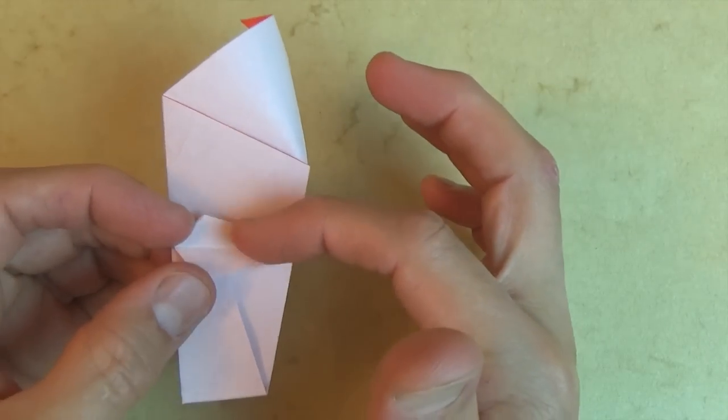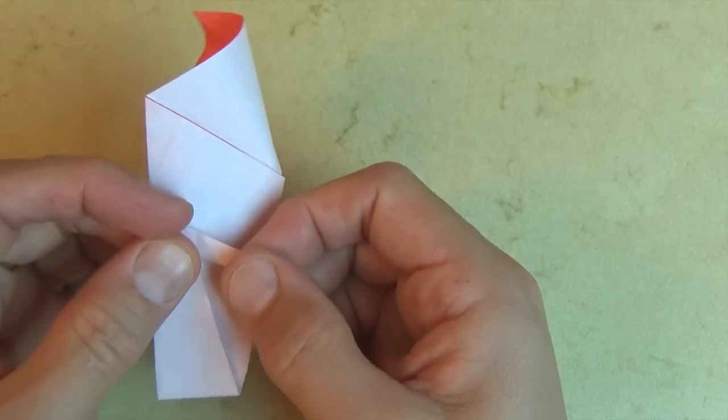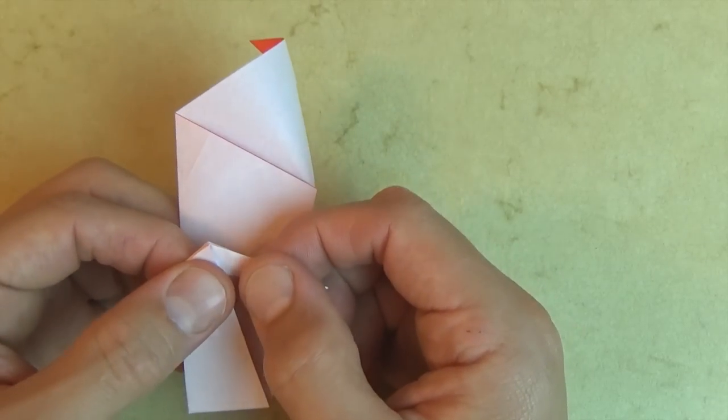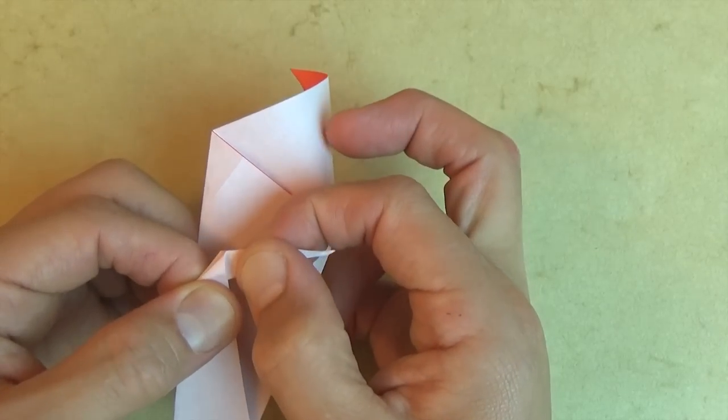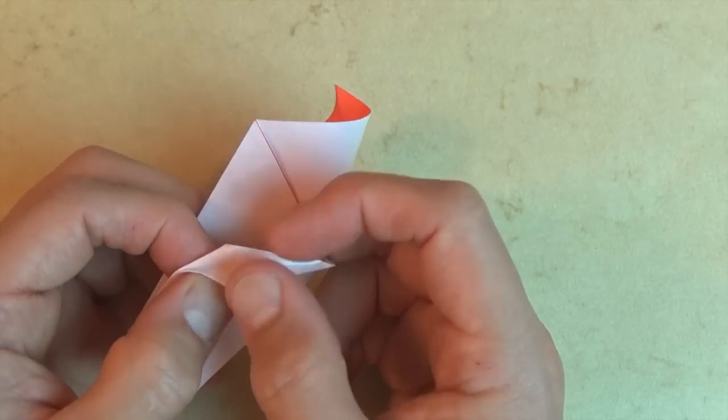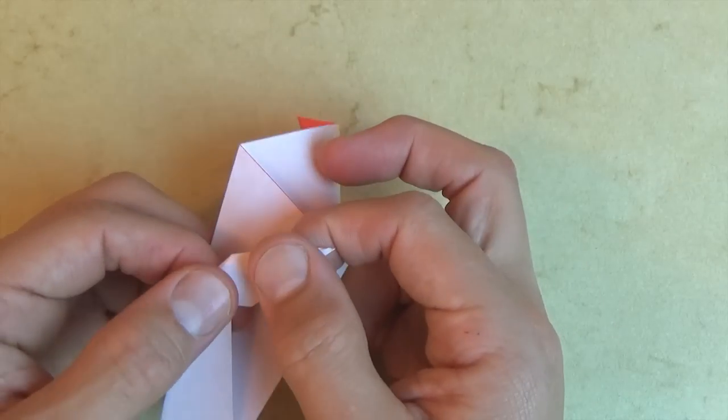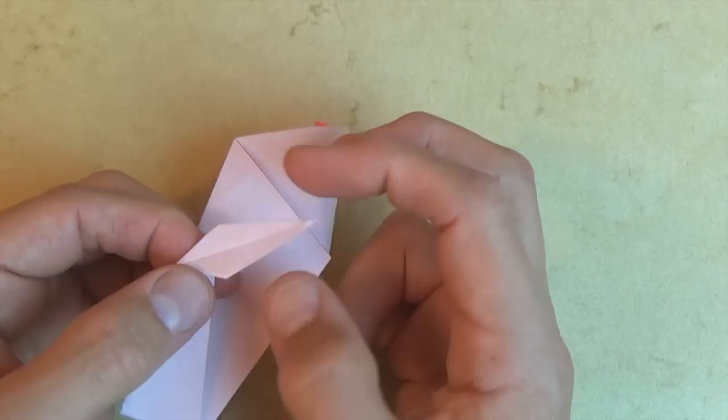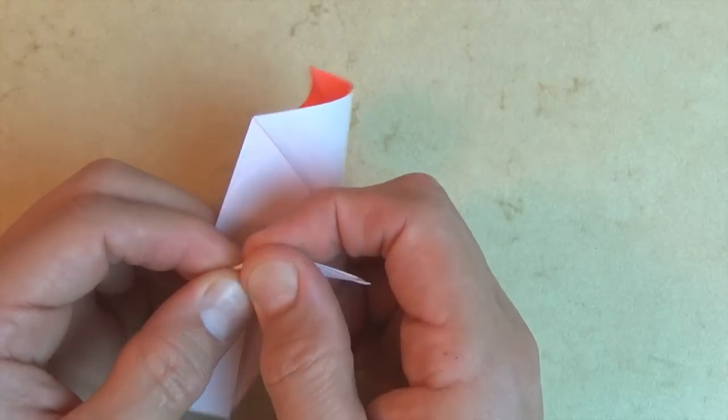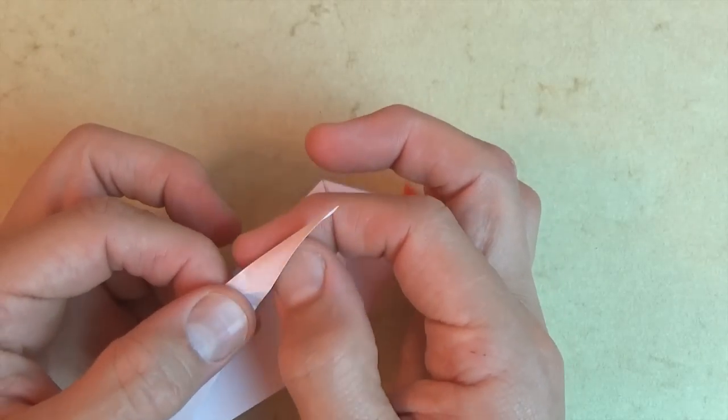This right here is the shape of the leaf. So fold up. If you want the leaf to be a little bit narrower, you can slide this up like that. See now when you open it, it's a little narrower. I like that shape. So let's fold it back up. And let's unfold this flap.